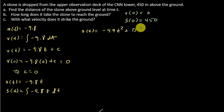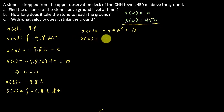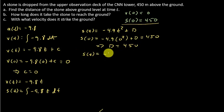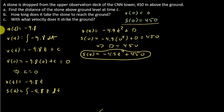We have to figure out what this constant term d is. I have the condition that s(0) = 450. So: s(0) = -4.9(0)² + d = 450, which tells me d = 450. So my position function is s(t) = -4.9t² + 450. That's the answer to part a.